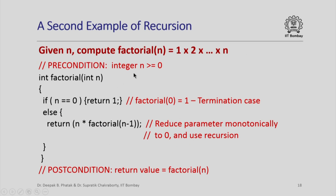Here is another simple example of recursion: given n, we want to compute factorial(n). A simple program with precondition n ≥ 0 and postcondition that the return value is factorial(n) uses recursion intuitively — if n is 0, return 1 (the termination case, since factorial(0) = 1); otherwise, return n × factorial(n-1). This uses the standard definition of factorial directly. Note that given a value of n, we decrement it so we move towards 0, and 0 is the termination case, so recursive calls monotonically move towards termination.